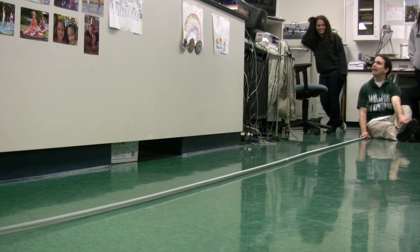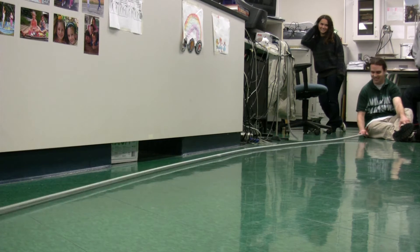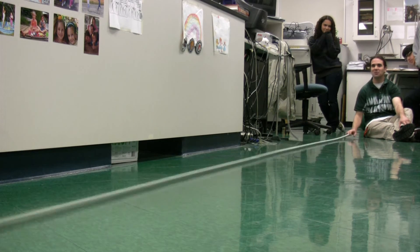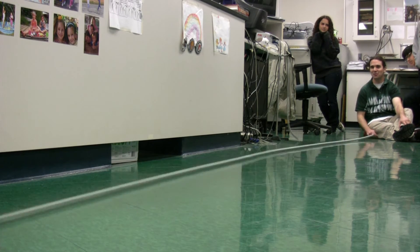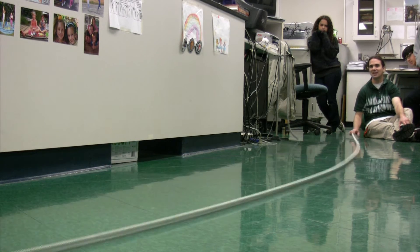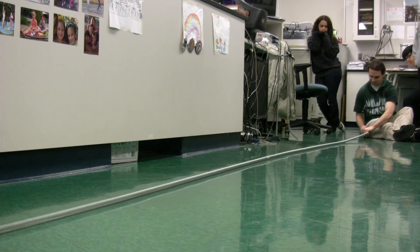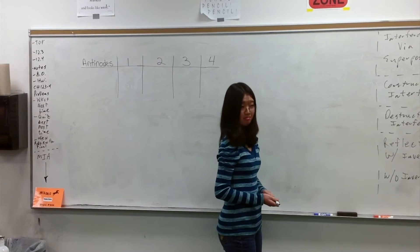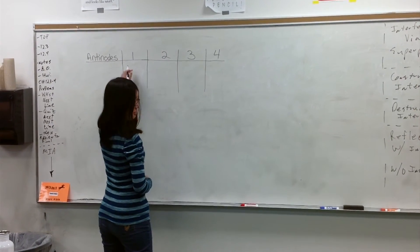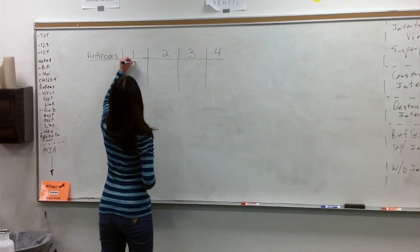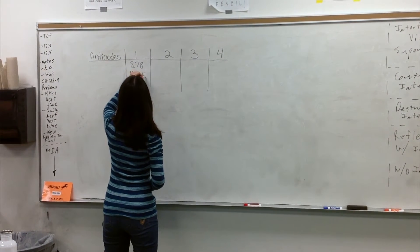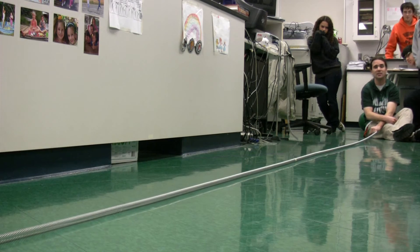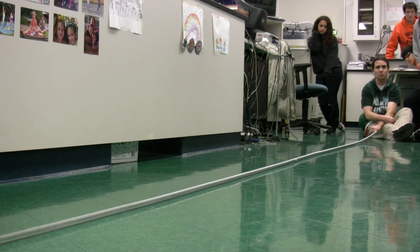We'll consider that a trial run. We'll try again. Timers, are you zeroed? Yes. Three, two, one, zero. One, two, three, four, five, six, seven, eight, nine, ten. Timers, could you please tell your times? 8.78. 8.85. 8.84. I should point out I have set down specific pieces of tape here — these two pieces of tape are six meters apart, so we know the length of this spring is six meters.